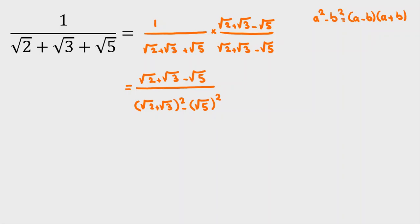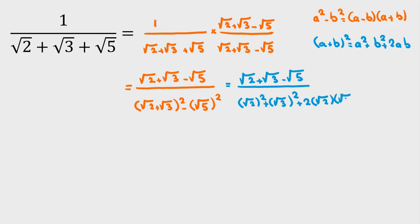In the next step, I want to calculate root 2 plus root 3 squared. So, I want to calculate a plus b squared. It will be a squared plus b squared plus 2ab. So, here it will be root 2 plus root 3 minus root 5 all over root 2 squared plus root 3 squared plus 2 times root 2 times root 3 minus root 5 squared.